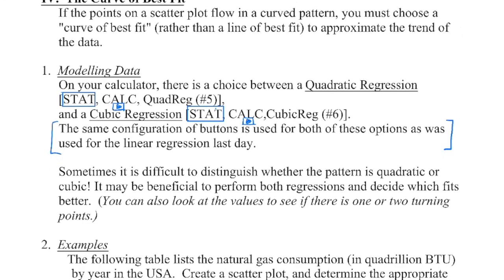Similar to last time, once we identify what type of regression it is, the calculator steps are very similar. The only difference is instead of choosing a linear regression, we're going to choose either a quadratic regression, which in the same menu is number five, or a cubic regression, which in the same menu is number six.